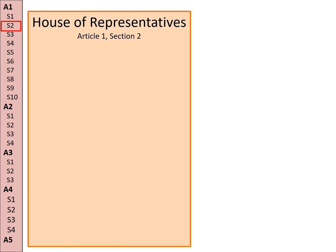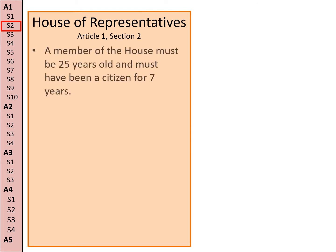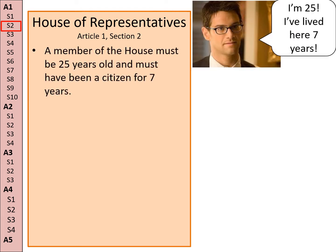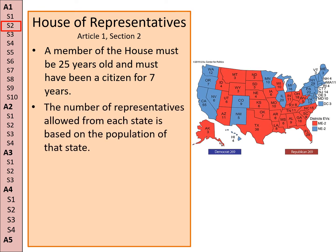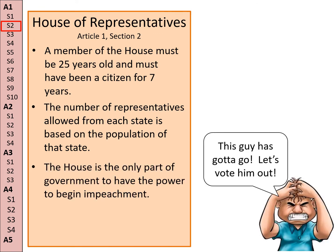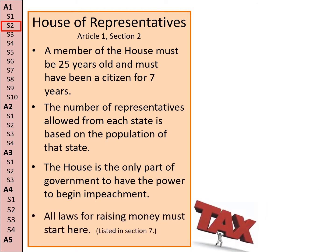Section 2: the House of Representatives. A member of the House must be 25 years old and must have been a citizen for seven years. The number of representatives allowed from each state is based on the population of that state. The House is the only part of the government to have the power to begin impeachment, and all laws for raising money must start here.